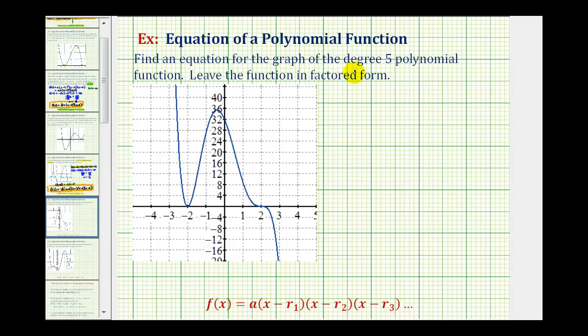We want to find an equation for the graph of the degree five polynomial function and leave the function in factored form. Because we have a degree five polynomial function, we know we have at most five real rational zeros or roots.